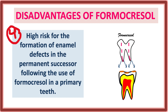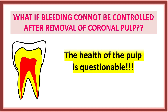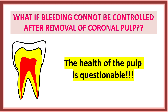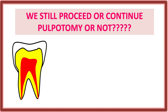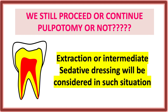An important point: if bleeding cannot be controlled after removal of the coronal pulp, the health of the pulp is questionable. In such a situation, extraction or an intermediate sedative dressing will be considered. If bleeding continues after removal of the coronal pulp, we will not proceed with pulpotomy but instead consider extraction or intermediate dressing.